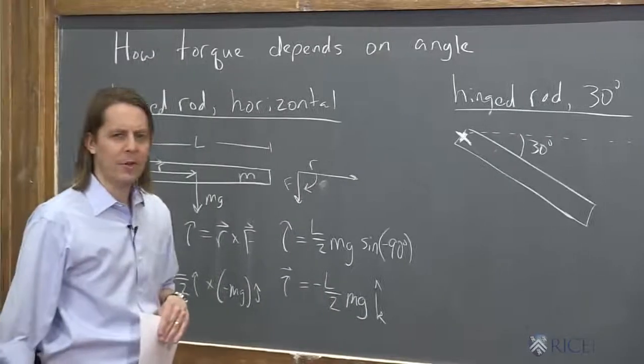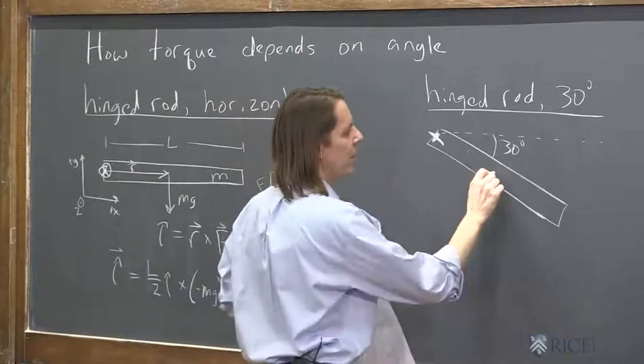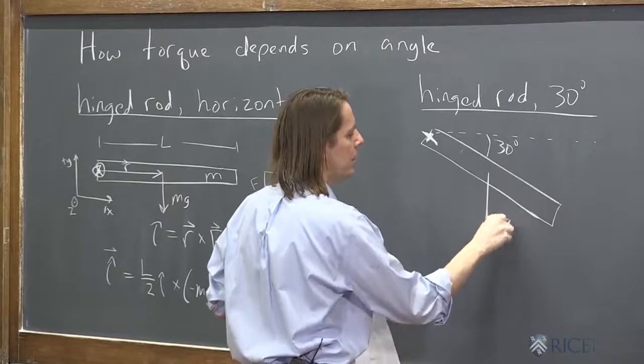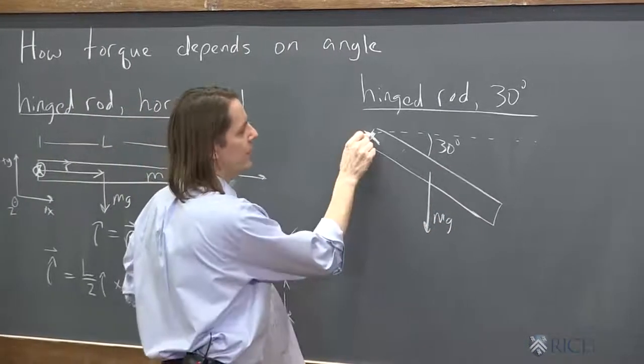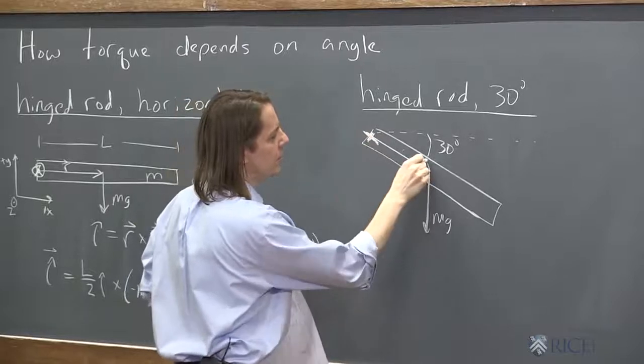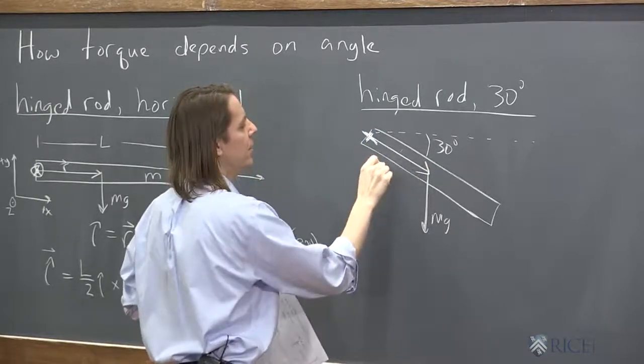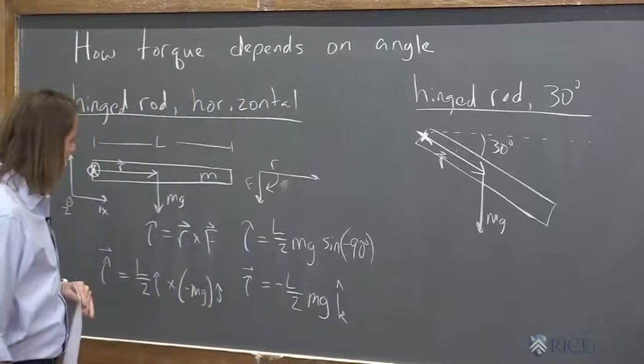So if we draw our vectors on here, we're going to do R cross F. F, the force is still going to act in the middle, mg down. R is from the axis of rotation to the point the force is applied. There's R.